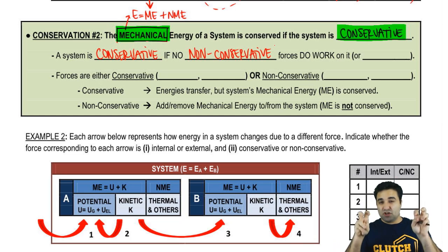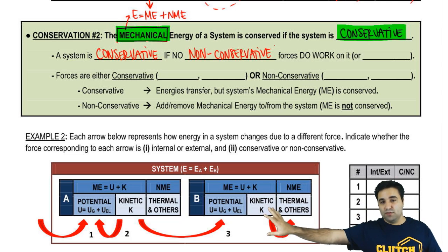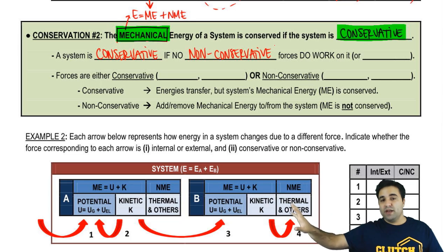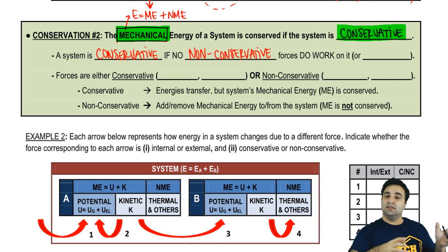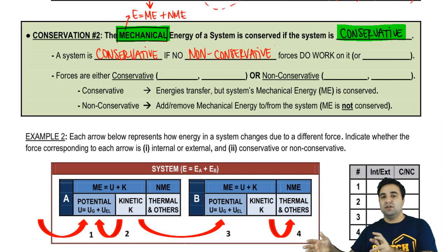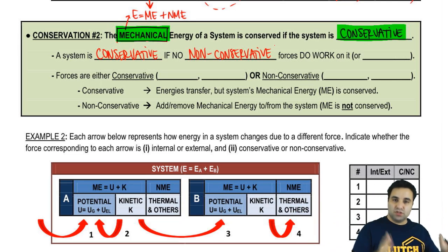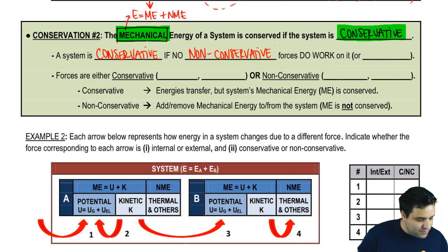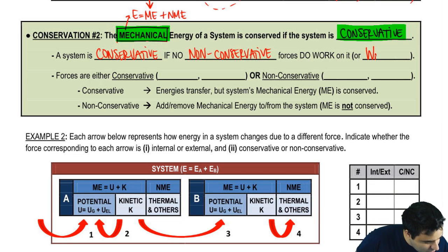A conservative system has to do exclusively with mechanical energy. Total energy has to do with an isolated system. Mechanical energy has to do with a conservative system. This means that the work done by non-conservative forces equals zero.